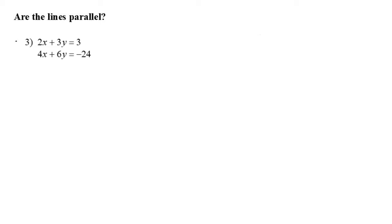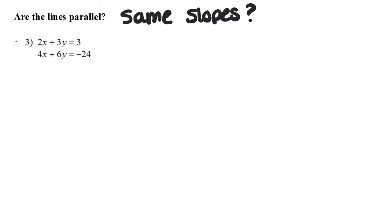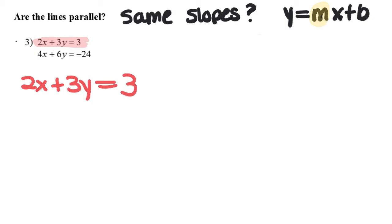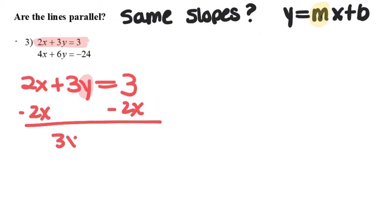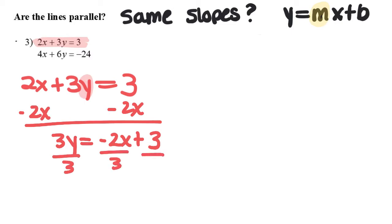In this example, we are again asked if the lines are parallel, so we need to check if the slopes are the same. We have to change these equations into y equals mx plus b form. For the first equation, 2x plus 3y equals 3: subtract 2x from both sides to get 3y equals negative 2x plus 3, then divide by 3 to get y equals negative 2 thirds x plus 1.